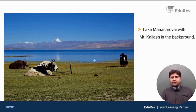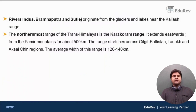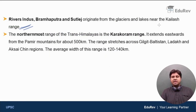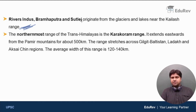Here is an image of Lake Manasarover with Mount Kailash in the background — it is a very beautiful place. An important point: Rivers Indus, Brahmaputra and Sutlej originate from the glaciers and lakes near the Kailash Range.